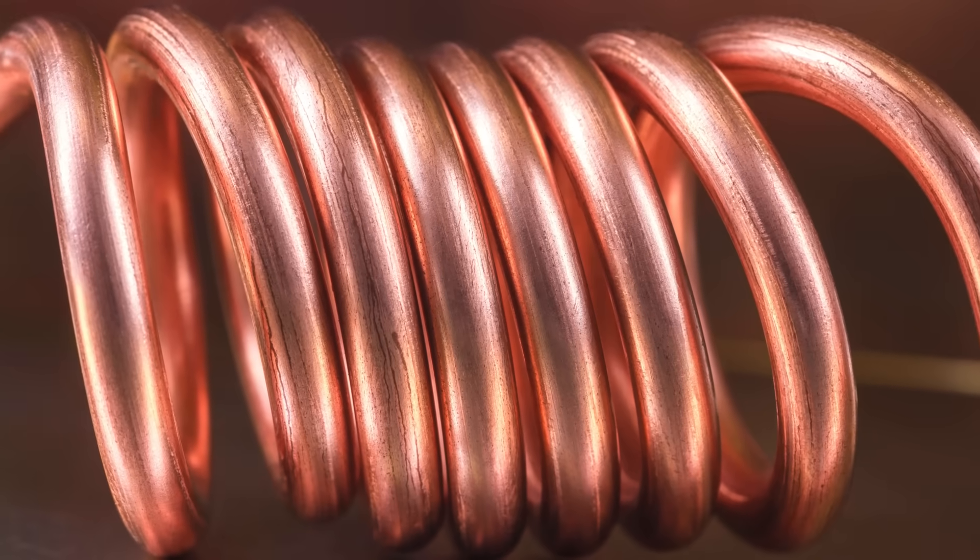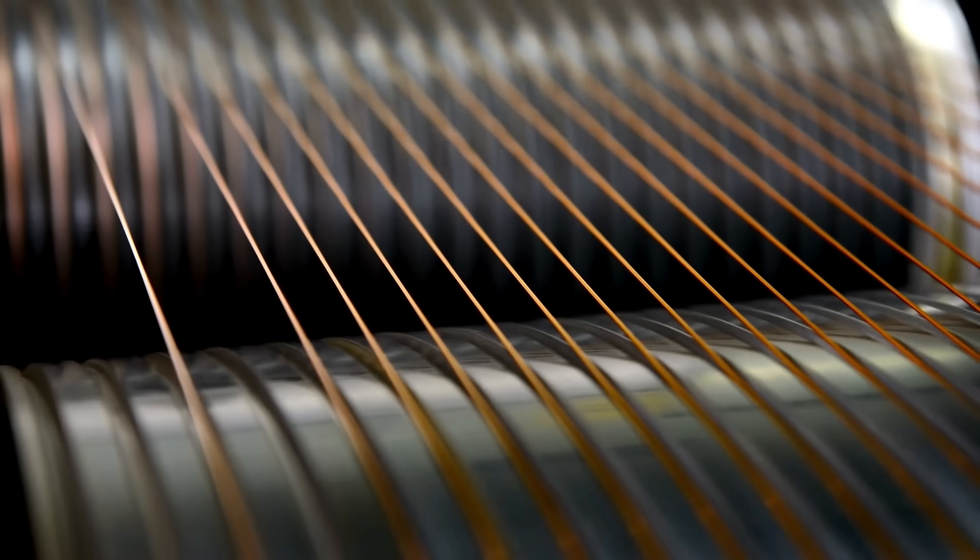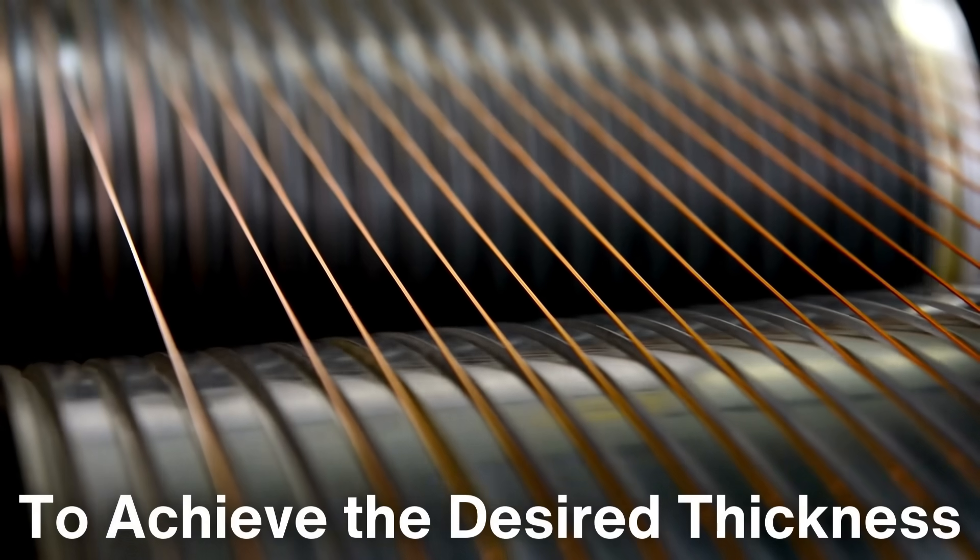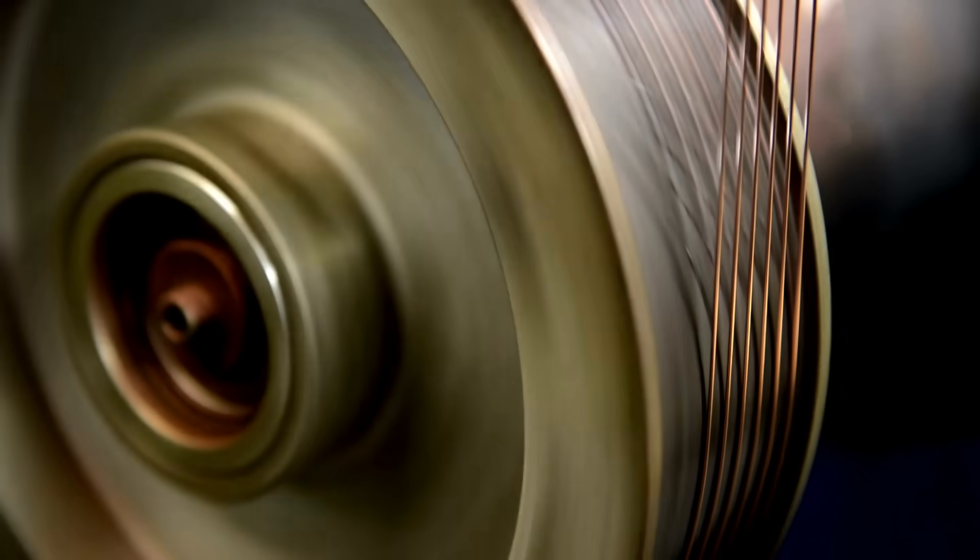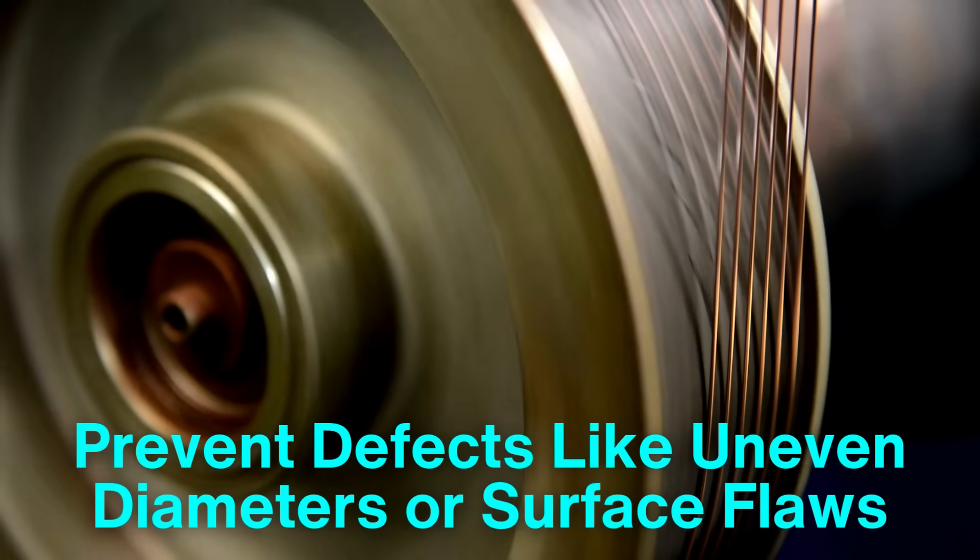Once the raw metal is ready, it's time to shape it into a wire. This step, called wire drawing, involves pulling the metal through a series of progressively smaller dies to achieve the desired thickness. The process relies on high-precision machinery and requires careful monitoring to prevent defects like uneven diameters or surface flaws.